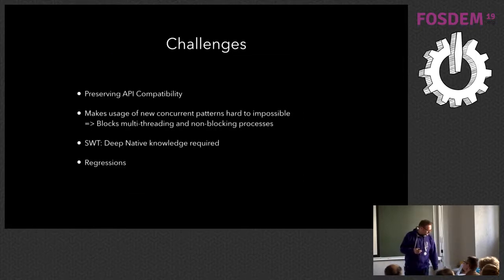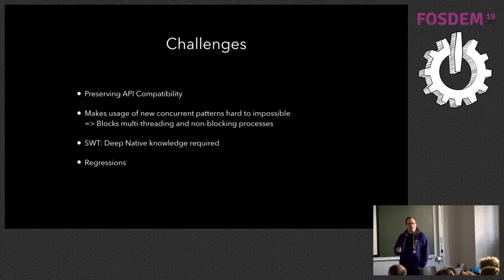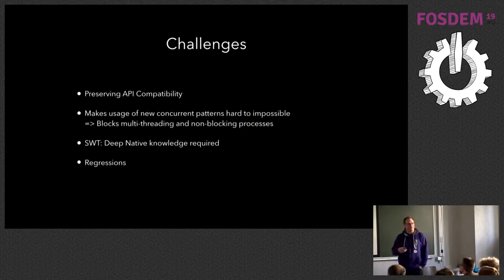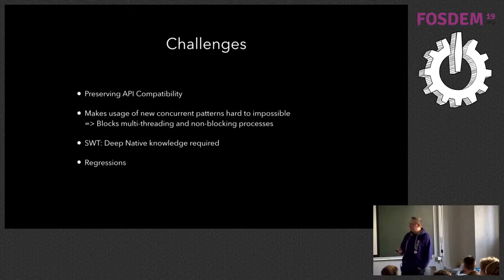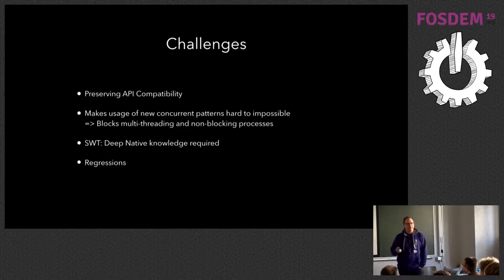Still ongoing. A problem we have at Eclipse is that we are strongly API compatible — API never changes. This makes it sometimes hard to really provide fixes, and we can't make use of all the fancy concurrency stuff that Java provides us, because the API was not designed that way. We can't just change the API, because there are plenty of tools outside that really depend on the stability of the API. For the native scrolling issue, we are lacking deep knowledge about Cocoa — we are good Java programmers, but there's not much knowledge about the internals of the Mac implementation.